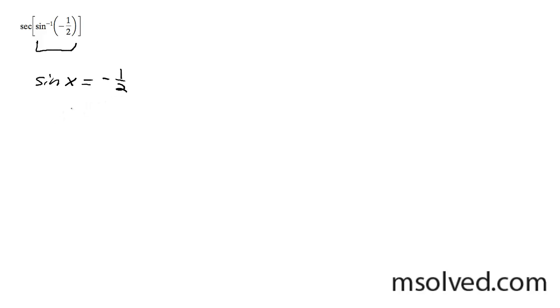So in order to achieve this, x is going to have to be equal to negative pi over 6. So you can simply plug this back in and get the secant of negative pi over 6.